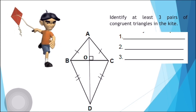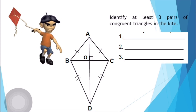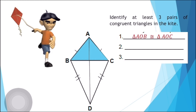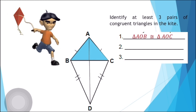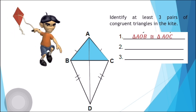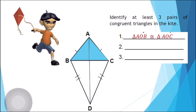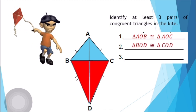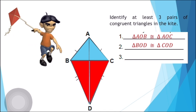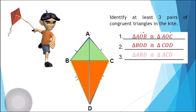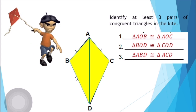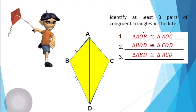Time's up. Now let's check your work. For our first pair of congruent triangles, we have triangle AOB is congruent to triangle AOC. For our second pair, triangle BOD is congruent to triangle COD. For our last pair, triangle ABD is congruent to triangle ACD.